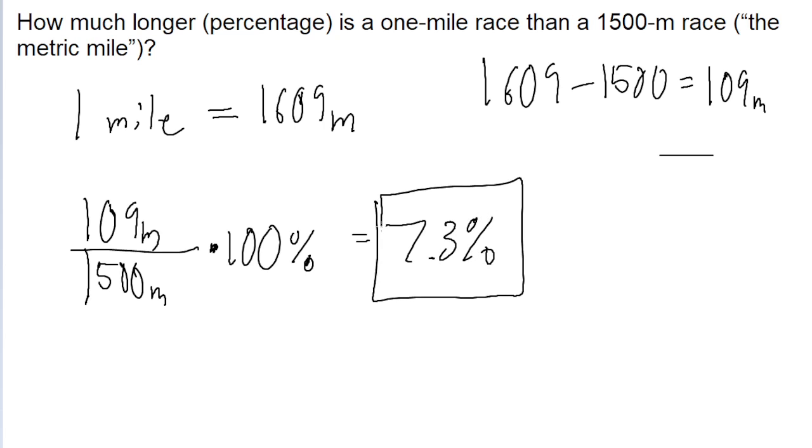So the one-mile race is 7.3% longer than the 1,500 meter race. And that's it for this problem.